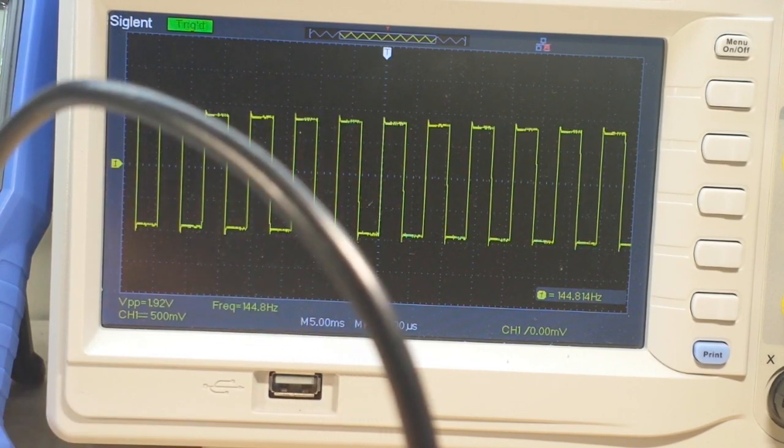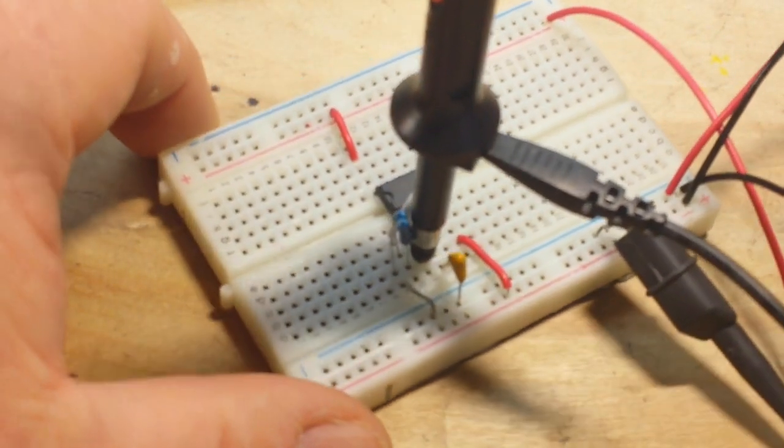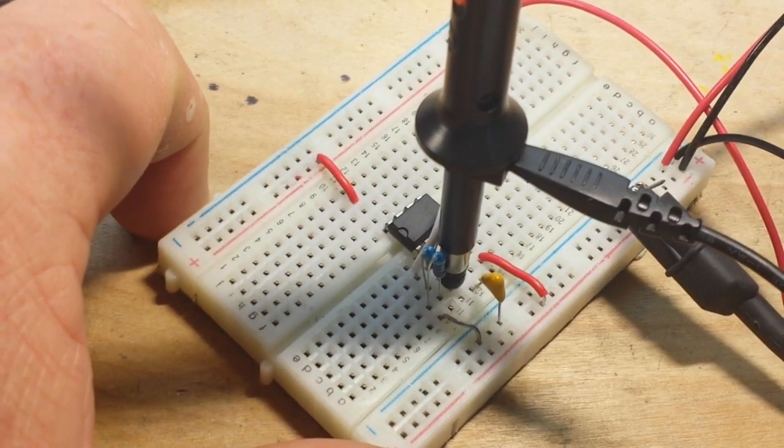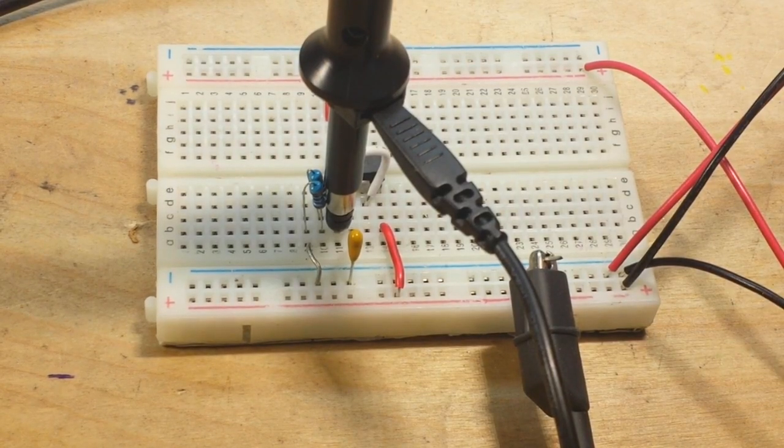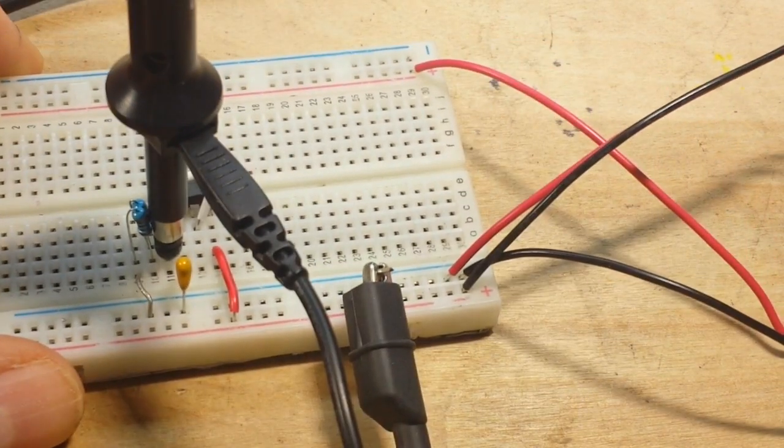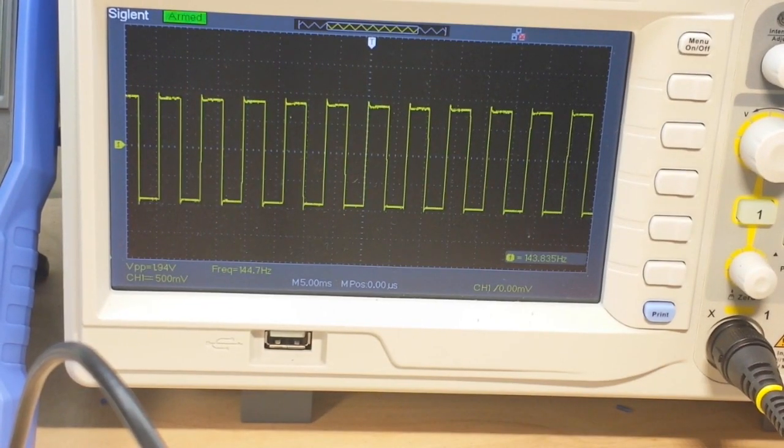Now I'm going to move over and probe the output, and voila. By creating that voltage divider, I'm going to have to rotate that so you guys can see it a little bit there.